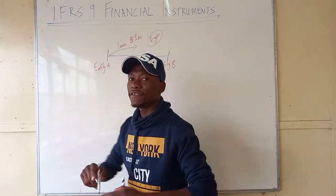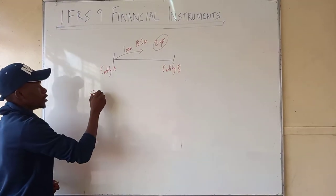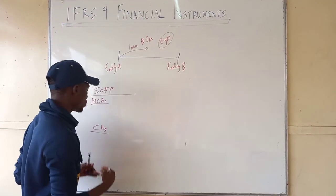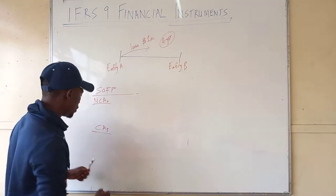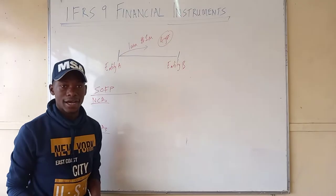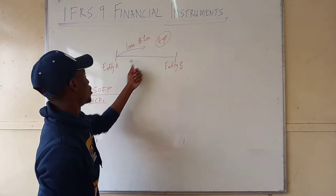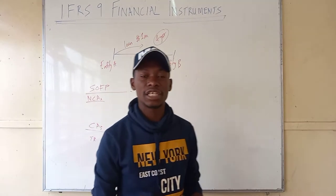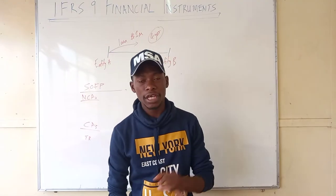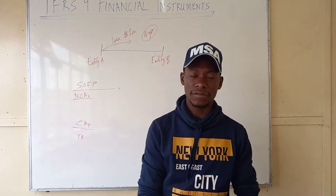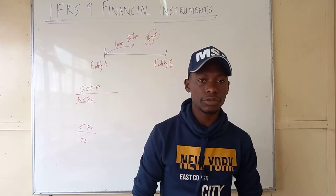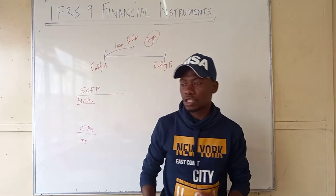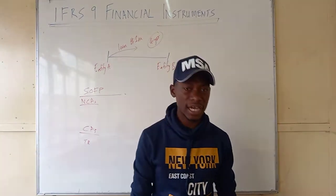In the statement of financial position, we have non-current assets and current assets. But when you say you have a receivable, it does not mean you record it in current assets — current assets trade receivables are for customers who purchased goods on credit. A financial instrument is any contract giving rise to financial assets and financial liability or equity instrument. This standard, IFRS 9, excludes physical assets such as inventory, PPE, and intangible assets, because there has to be a contract. Any asset or liability that is not contractual in nature is not covered by IFRS 9.